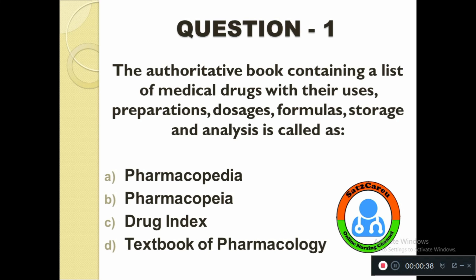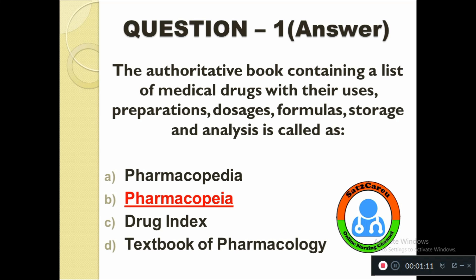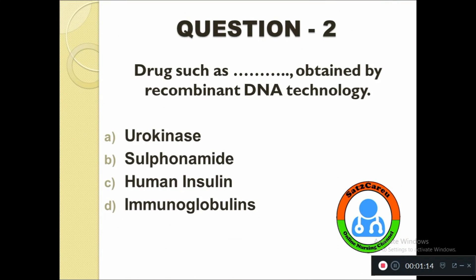Question number one: The authoritative book containing a list of medical drugs with their uses, preparations, dosages, formulas, storage, and analysis is called as — option A: Pharmacopedia, B: Pharmacopoeia, C: Drug Index, D: Textbook of Pharmacology. The right answer is Pharmacopoeia.